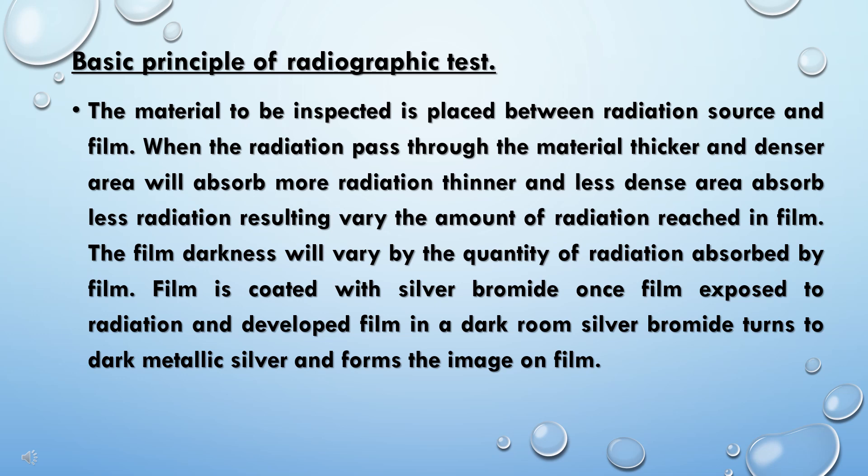This variation in absorption results in varying amounts of radiation reaching the film, causing differences in film darkness. The film is coated with silver bromide. Once the film is exposed to radiation and developed in a dark room, the silver bromide turns to dark metallic silver, forming the image on the film.